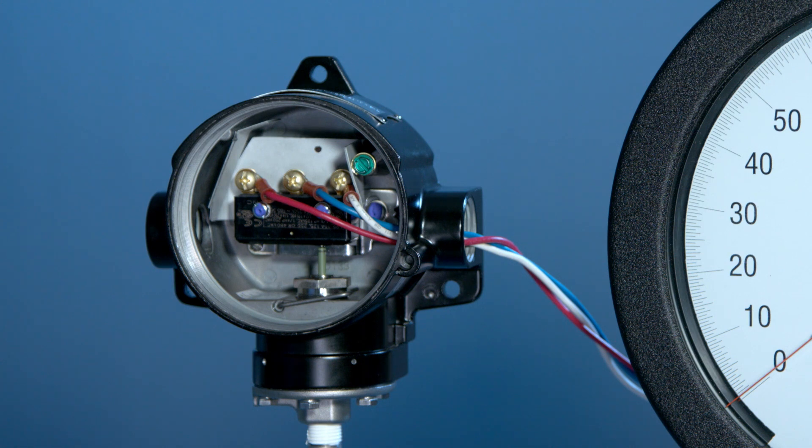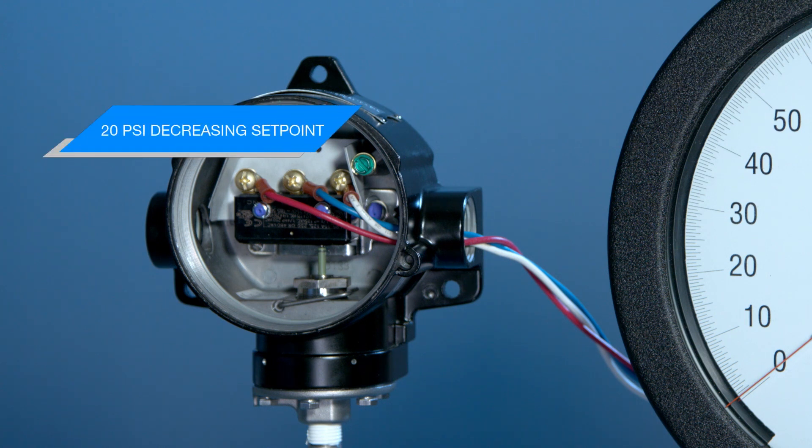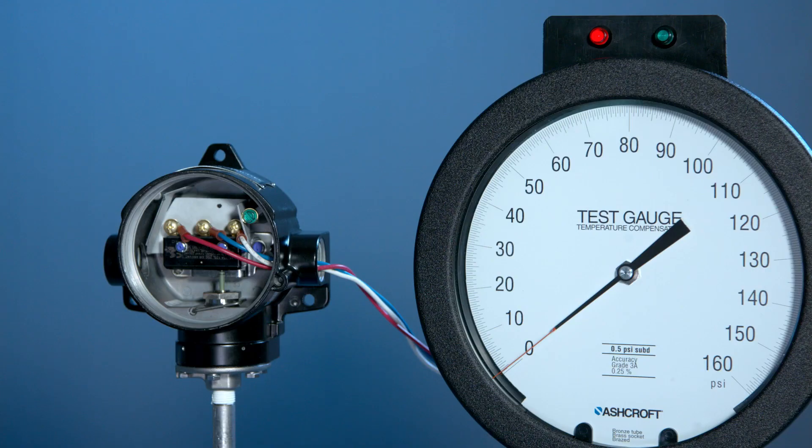The first part of our calibration is we are going to exercise the switch, and then we are going to set the switch for a 20 PSI decreasing set point. For the decreasing set point, we always go full scale and come back down. So we're going to take it to 100 PSI, and then down to our set point of 20.